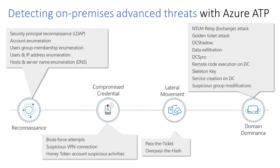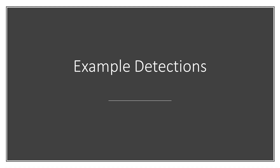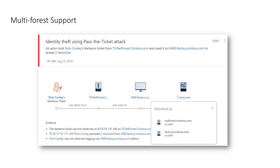This is not a complete set of detections, but I wanted to show you the breadth of detections that Azure ATP covers. Here are three examples of how effective Azure ATP can be. One of the first things you'll want to do in an incident response situation is stand up Azure ATP to get a good idea of what's happening. A great example is the multi-forest support and being able to identify a pass-the-ticket attack across multiple Active Directory forests.